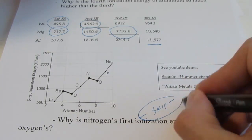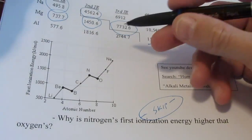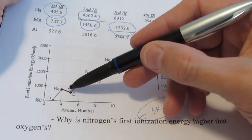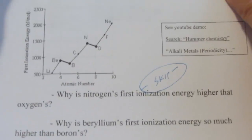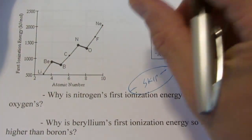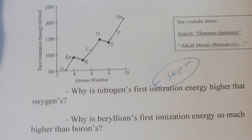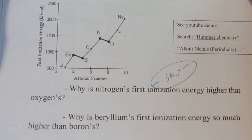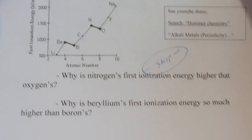Now this chart right here for this year we're going to skip, so don't worry about it — it deals with pairing and how it becomes a little bit easier to take away an electron from a paired orbital than when it's by itself. Don't worry about that for right now.